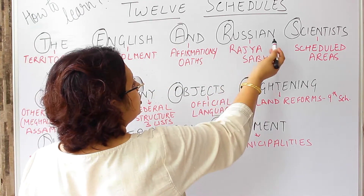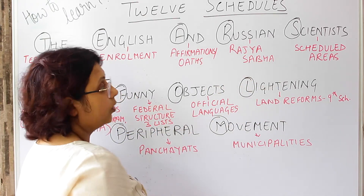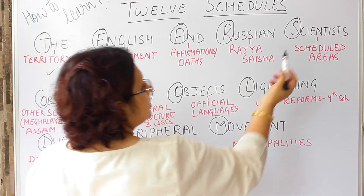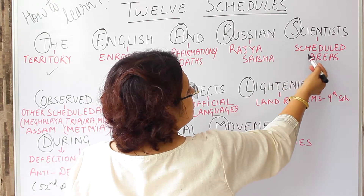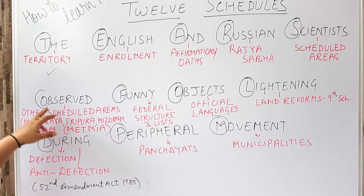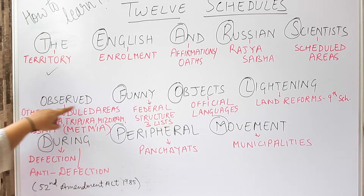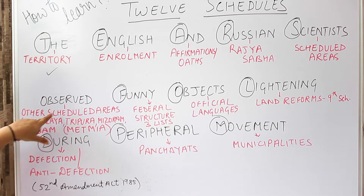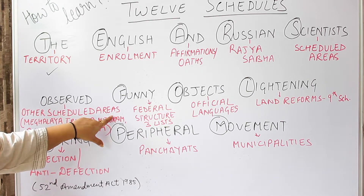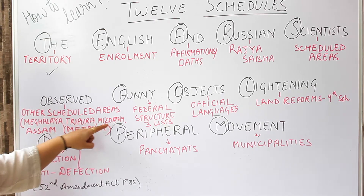From 'Russian' we take R and write Rajya Sabha for the 4th schedule. From 'Scientists' we take S for Scheduled Areas — that's the 5th schedule. Then from 'Observed' we take O for Other Scheduled Areas — the 6th schedule. These other scheduled areas are Meghalaya, Tripura, Mizoram, and Assam.